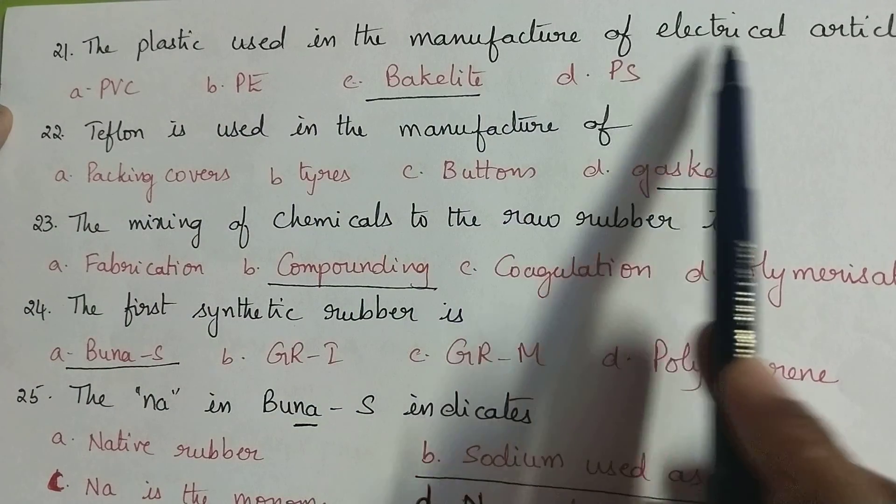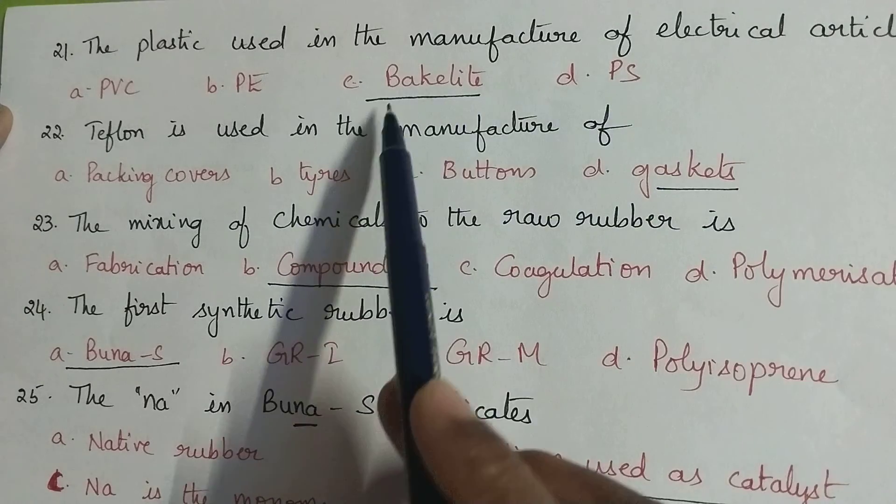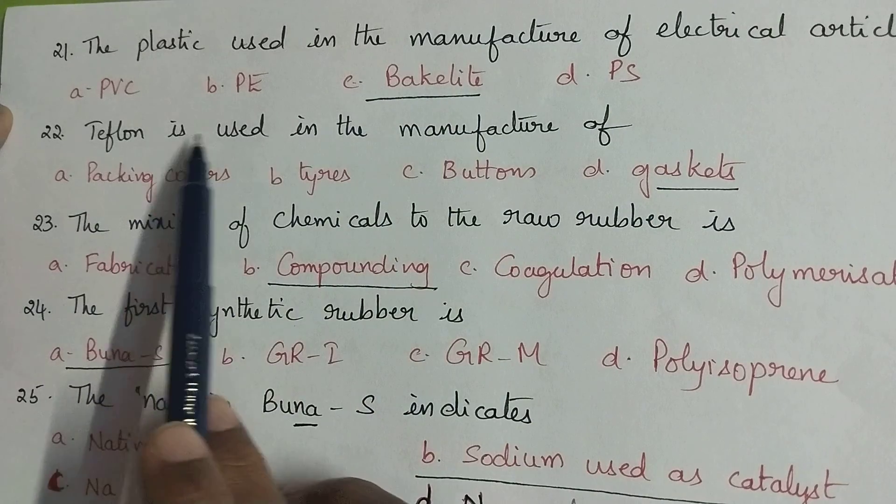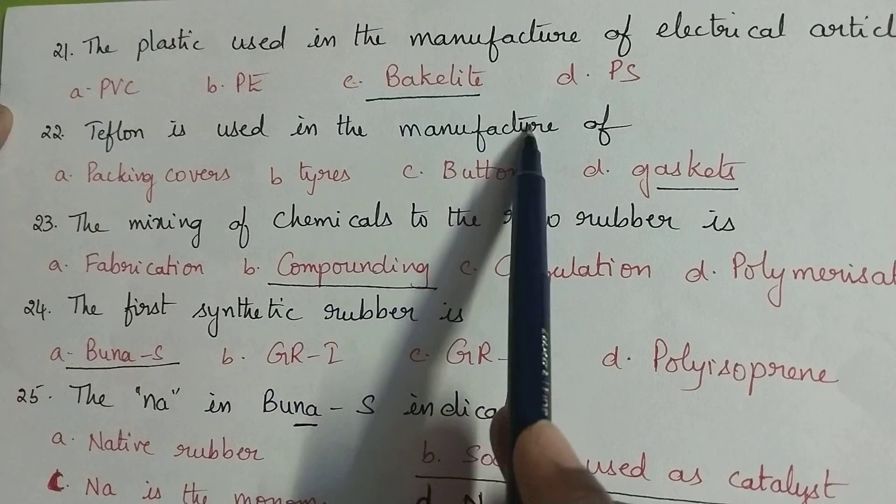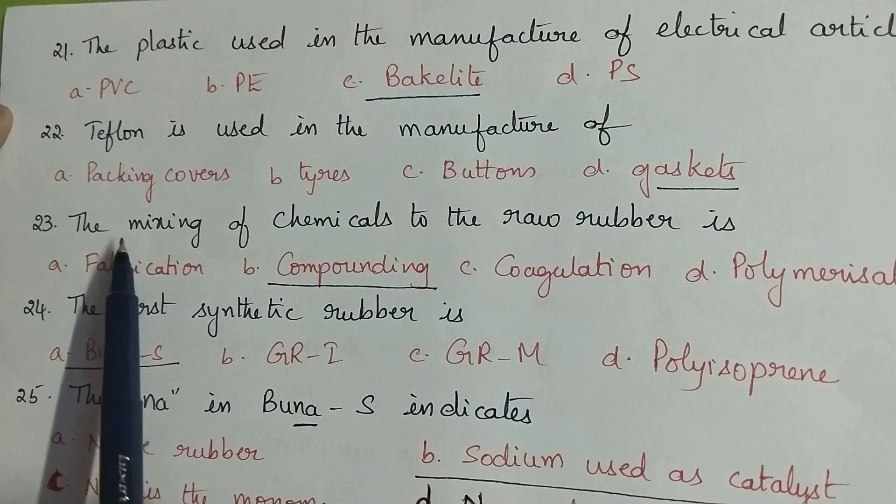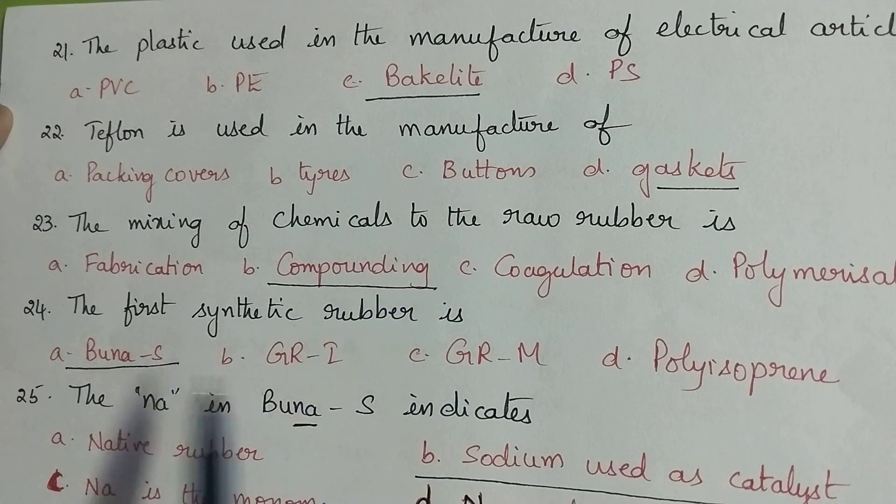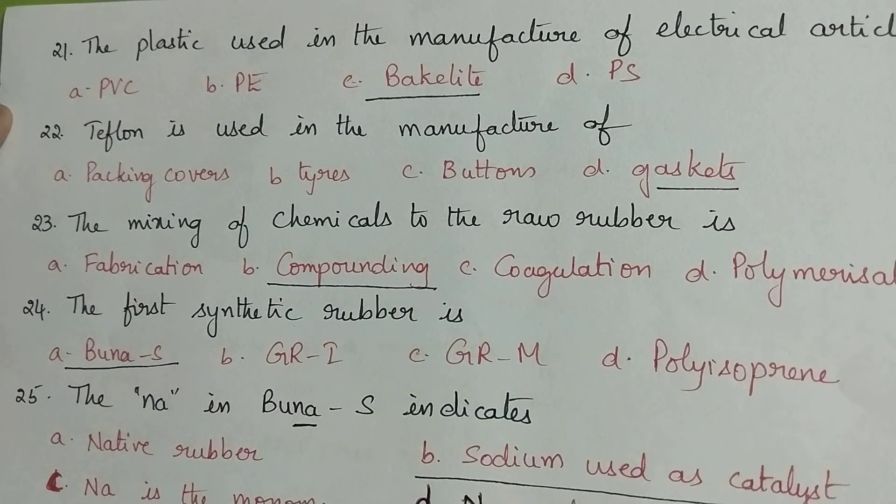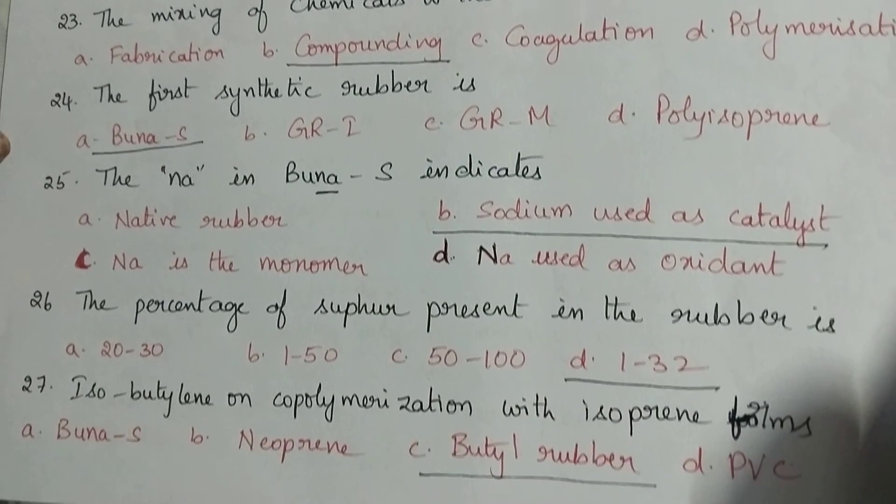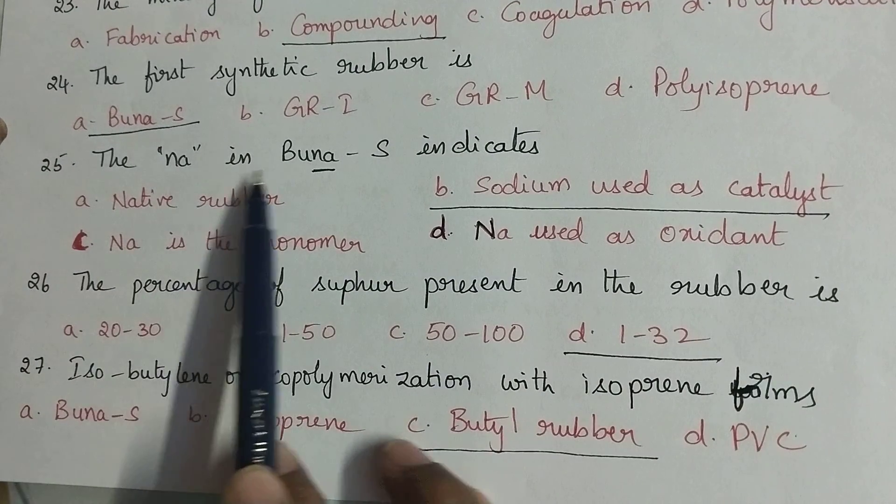The plastic used in the manufacturing of electrical articles is bakelite. Teflon is used in the manufacture of gaskets. The mixing of chemicals to the raw rubber is called compounding. The first synthetic rubber is Buna-S rubber.